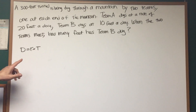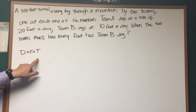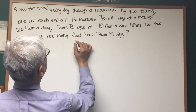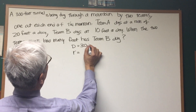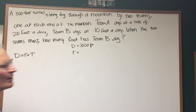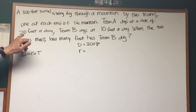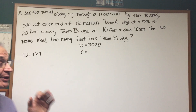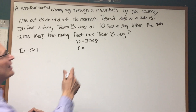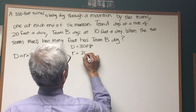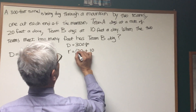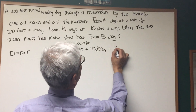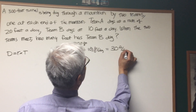We'll use this basic formula: distance equals rate times time. Now what's the rate here? We know what the distance is — the distance is the length of the tunnel, 300 feet. But what's the rate? We have two teams working, 20 feet a day and 10 feet a day. They're both working on the same project, so therefore the rate at which the tunnel is being dug is the sum of the two rates: 20 feet a day plus 10 feet a day — they're digging at a rate of 30 feet a day.